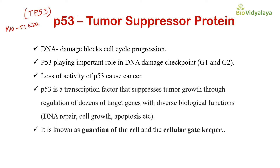P53 plays an important role in DNA damage checkpoints, that is in G1 and G2 checkpoints. If there is any DNA damage or any other stress in a cell, then P53 protein will become active and that will arrest the cell cycle or block cell cycle progression. Loss of activity of P53 causes cancer.